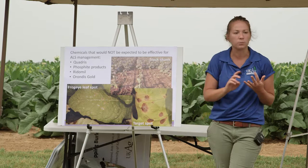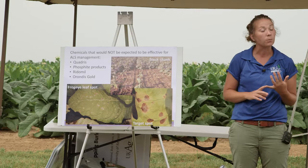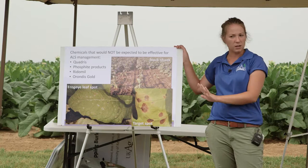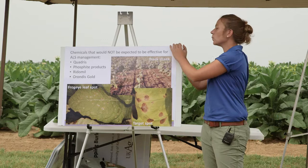Our mainstays — Ridomil, Orondis Gold, and Presidio — those mainstays for black shank management, we wouldn't expect efficacy from those on angular leaf spot either. Those products are targeted toward the soil oomycete pathogens. They won't touch the angular leaf spot bacterial pathogen.